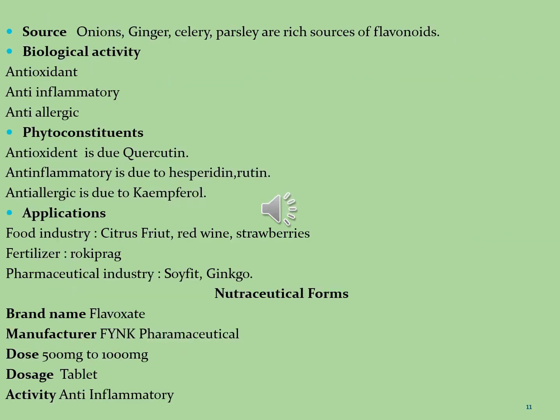Sources of flavonoids include onions, ginger, celery and parsley as rich sources, as well as tea, citrus fruit, citrus fruit juices, berries, red wine, apples and legumes. Flavonoids are used as anti-allergic, anti-inflammatory, antioxidant, antimicrobial, antibacterial, antifungal, antiviral, anticancer and anti-diarrheal activities.